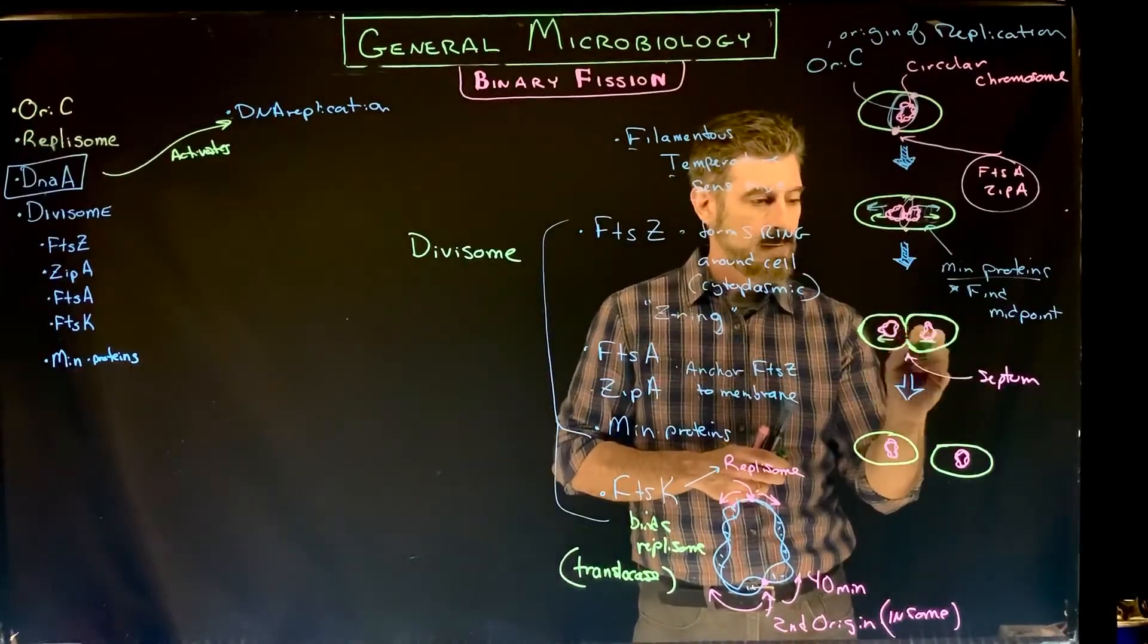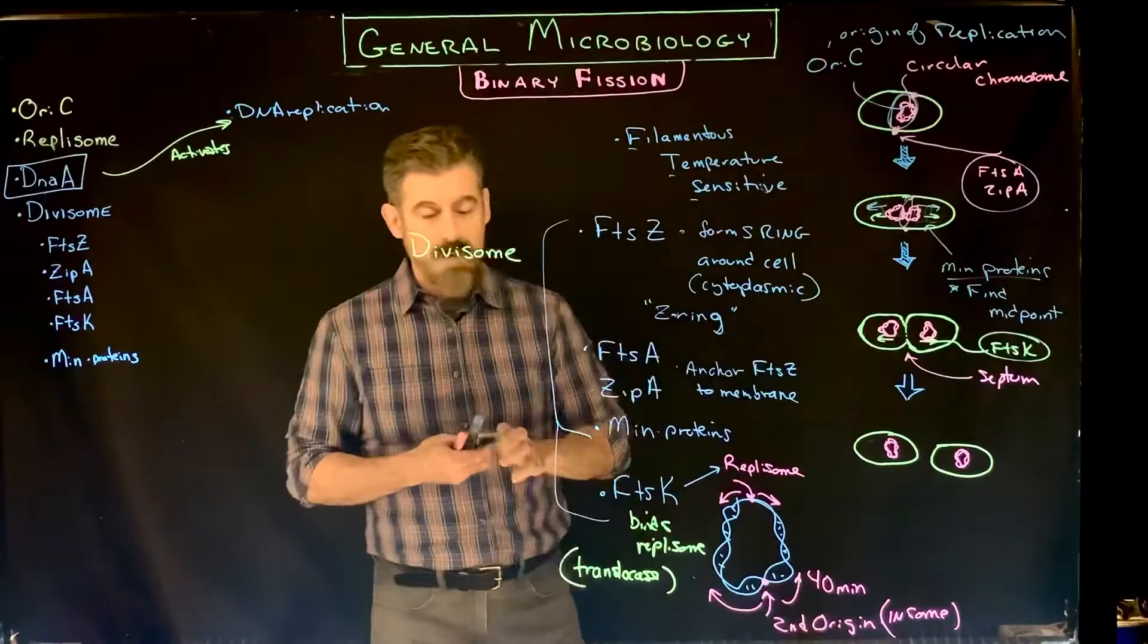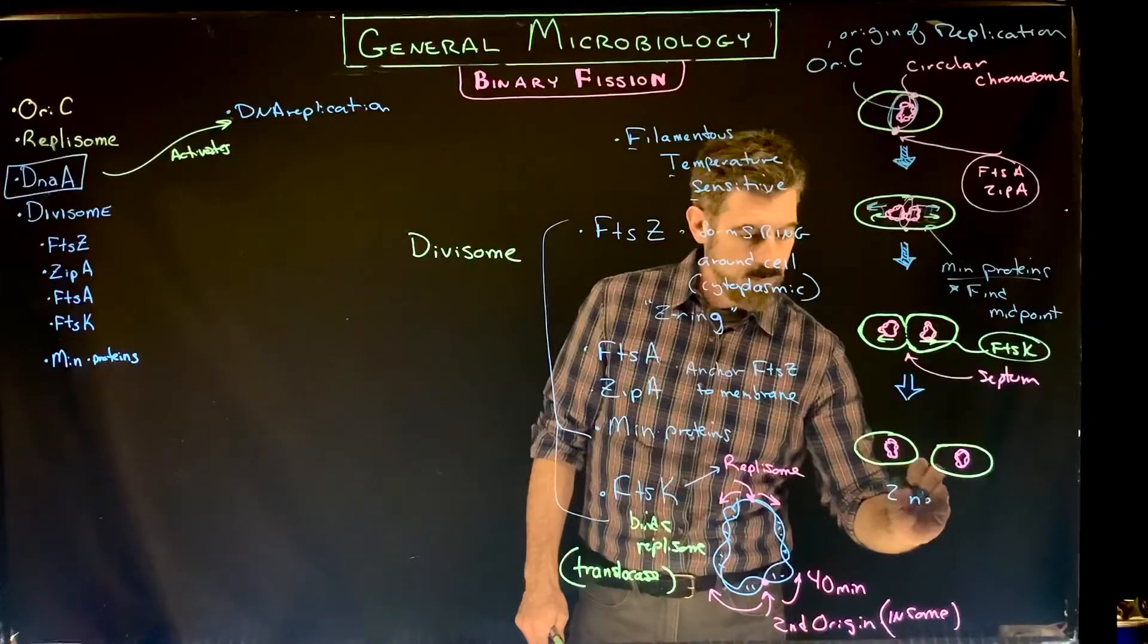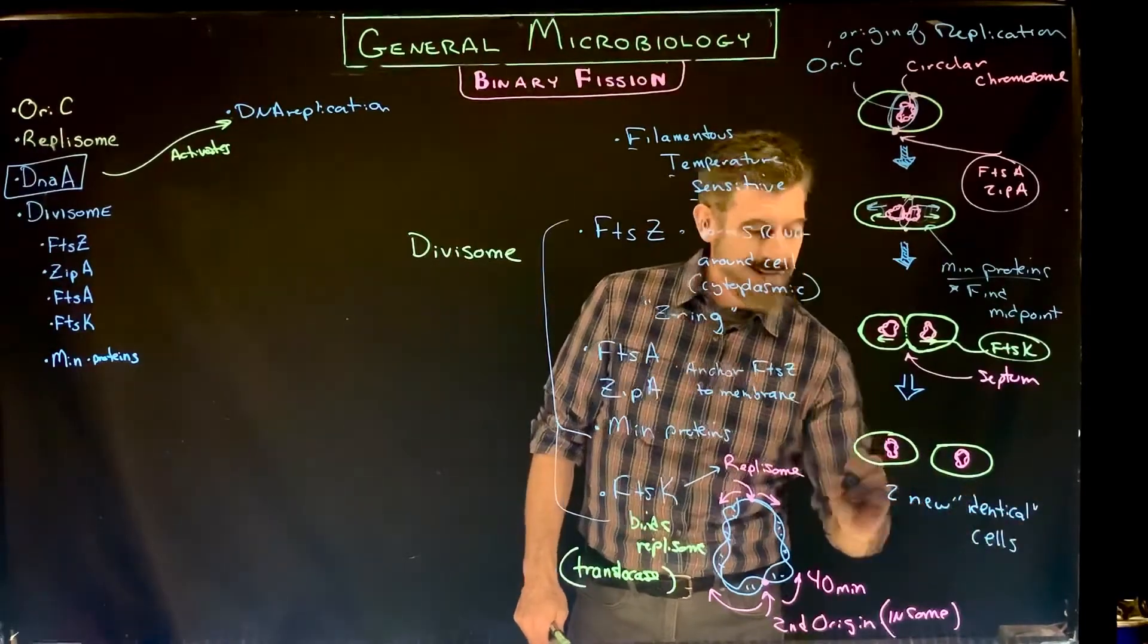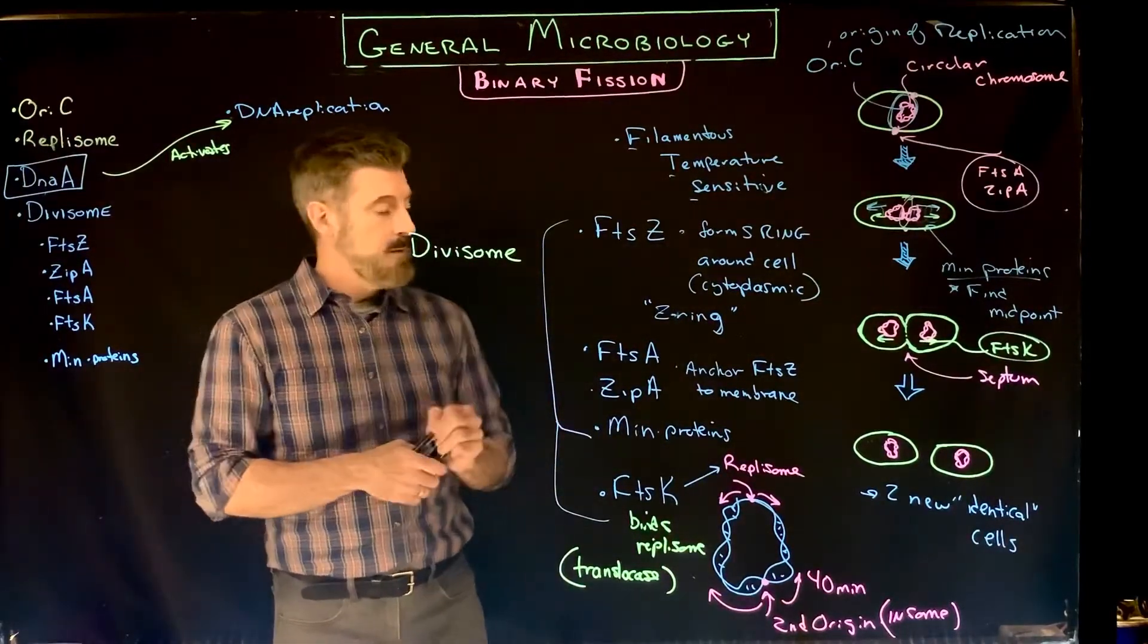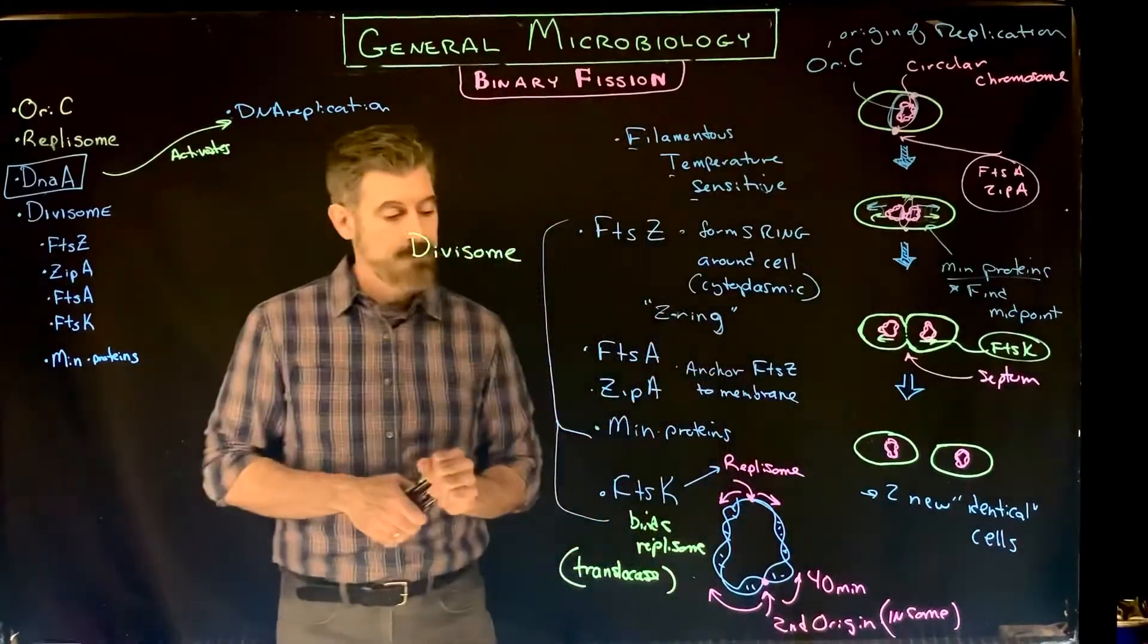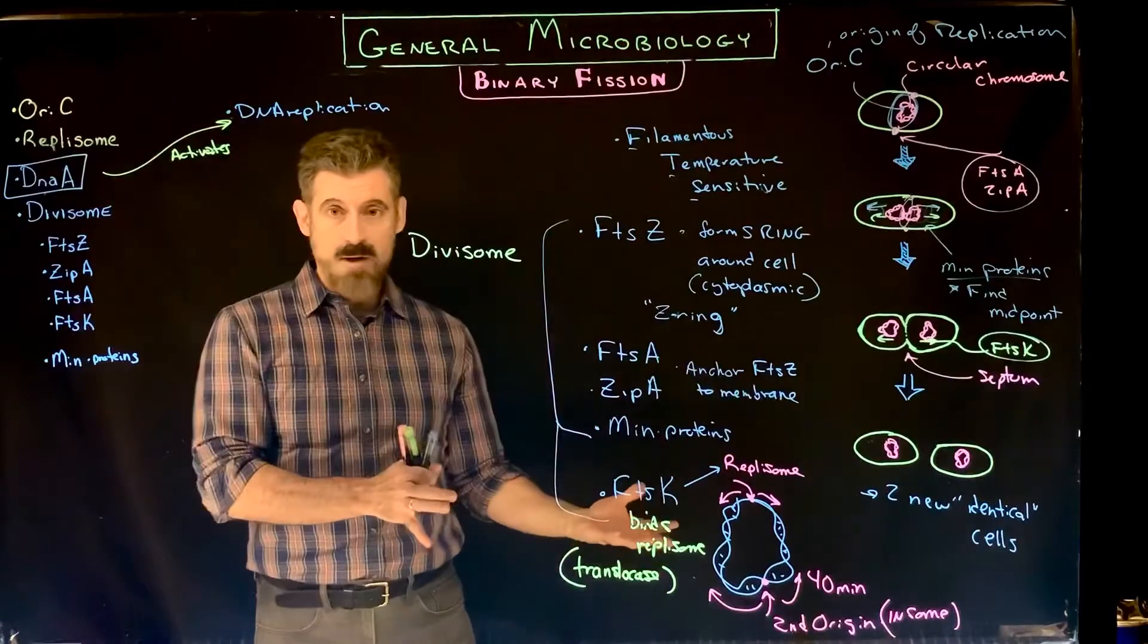The separation here is aided by a protein called FTSK. And then this pulls down together, the cell membranes pinch off, and you end up with two new cells. We'll say identical, but later we'll get into things that make it possible that they might not be identical. But in general, that's the idea - they're two identical cells, both genetically identical and in terms of their size. They both have the same size when they split. So we get two equal cells. That's the overview of the divisome and the general process of binary fission.